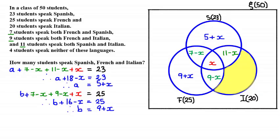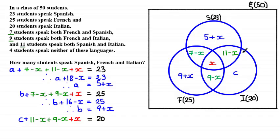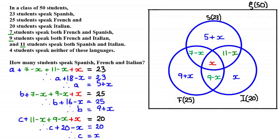Students who only speak Italian are represented by this shaded region. Let C be that number. Then C plus 11 minus X plus 9 minus X plus X equals 20, representing all elements in the Italian set. Simplifying gives C plus 20 minus X equals 20, so C equals X. We update the Venn diagram, and we write 4 outside all the circles for students who speak none of these languages.